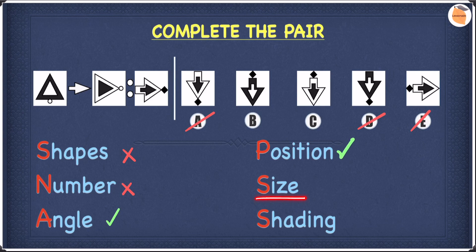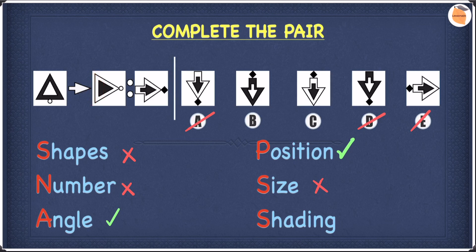In terms of size, the size stays the same, so we cross off size. Moving on to shading — when it's black on the outside and white on the inside, the next shape becomes white on the outside and black on the inside; they basically swap. So here we have white on the outside and black on the inside, which means we must have black on the outside and white on the inside. Out of B and C, it's obviously B. So we cross off C, and our answer to this question is B.